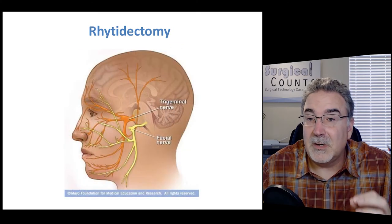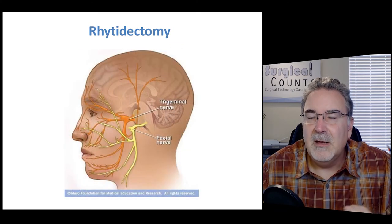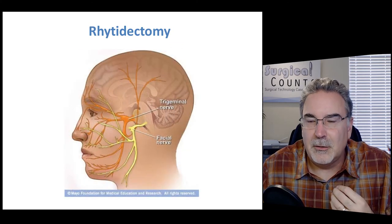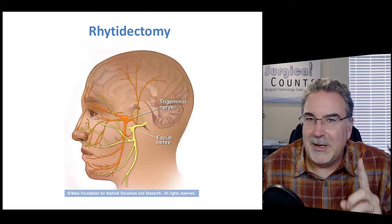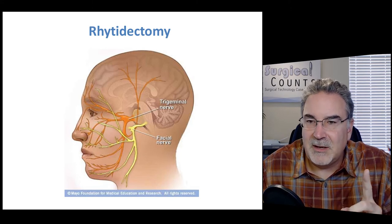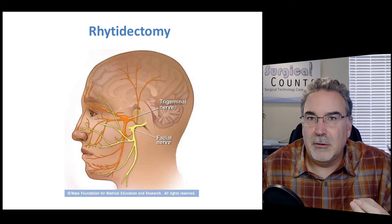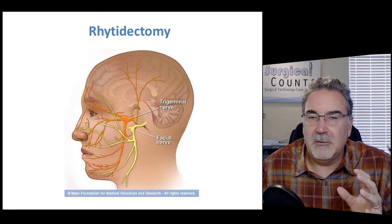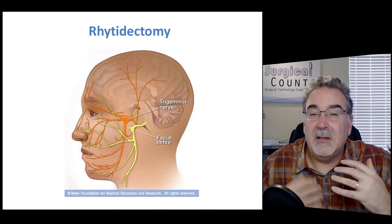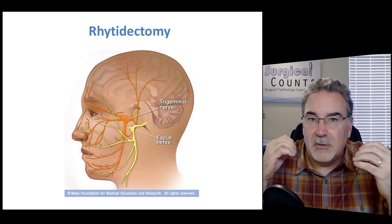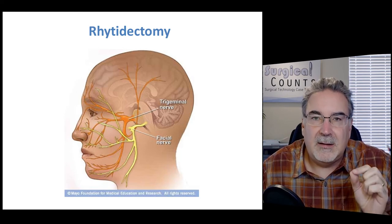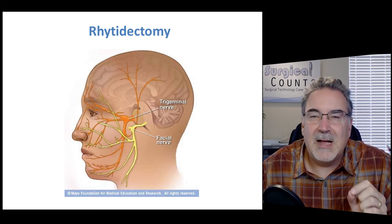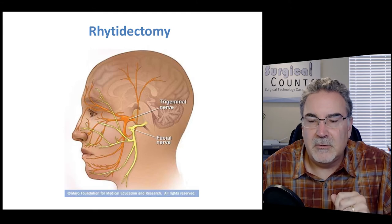Facelifts or rhytidectomies can be a little challenging because we need to protect all the nerves running through this area. We have the facial nerve — cranial nerve number seven — and the trigeminal nerve — cranial nerve number five — running through this area. As we lift the face, cut through skin and reposition it, we must take care not to damage either of these nerves.